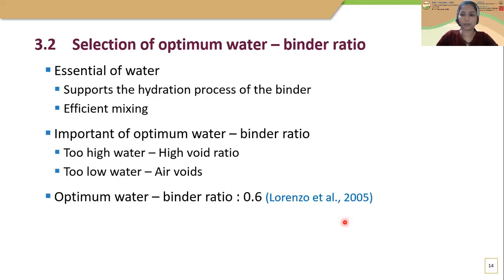The next step is selection of optimum water-binder ratio. Water is essential in binder-soil mixing as it supports the hydration process and helps achieve efficient mixing. It is important to maintain optimum water content. If water content is too high, the mix will have a high void ratio, leading to electrostatic attraction loss between clay particles and reduced strength. If water content is too low, it affects the strength by introducing air voids, which reduce the ability to disperse binder ions and result in unbounded clay surfaces due to insufficient mixing. Therefore, maintaining the optimum water-binder ratio is essential.